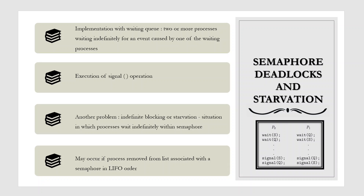We can say that a set of processes is in a deadlocked state when every process in the set is waiting for an event that can be caused only by another process in the set. Another problem related to deadlocks is indefinite blocking or starvation, a situation in which processes wait indefinitely within the semaphore. Indefinite blocking may occur if we remove processes from the list associated with the semaphore in LIFO (last in, first out) order.